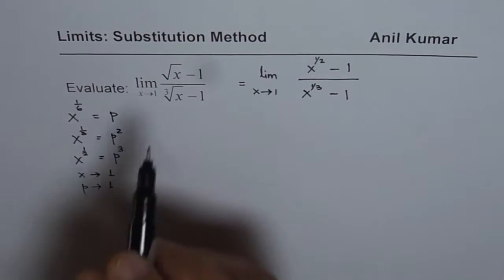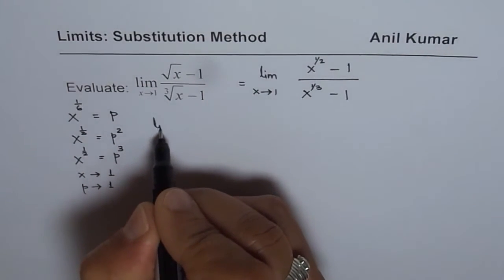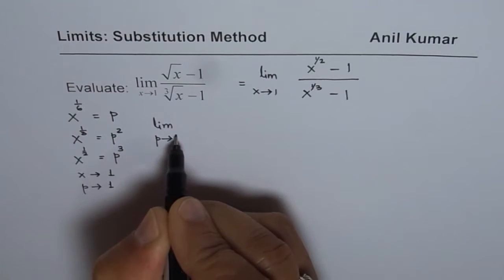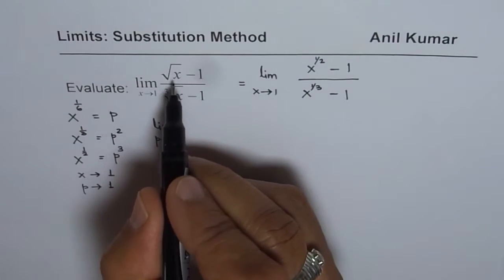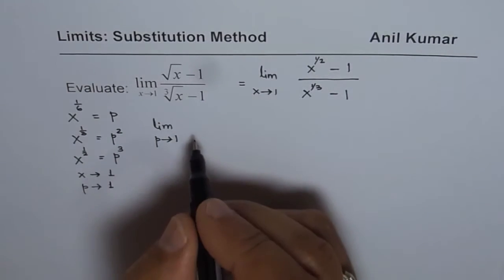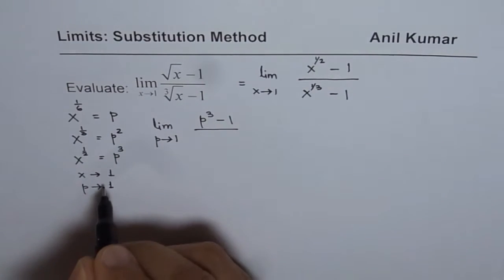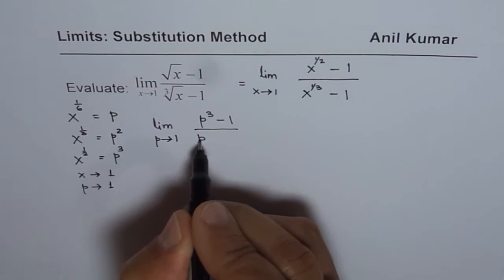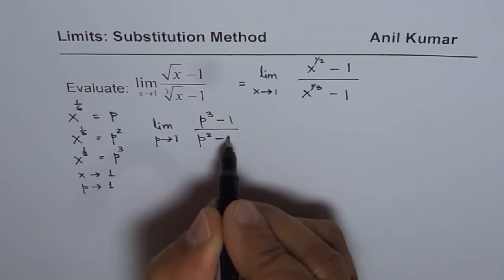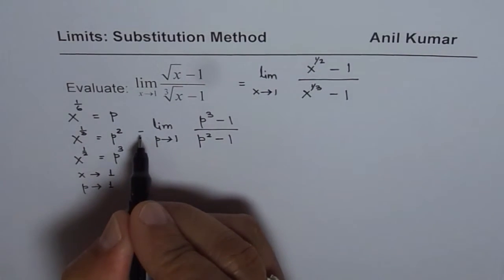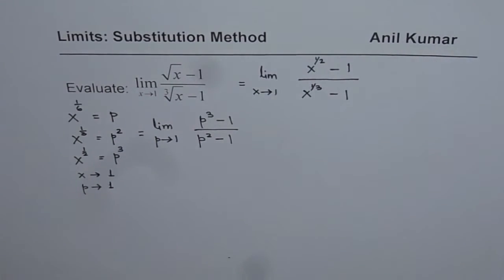So once we do this substitution, we can rewrite the question as limit p approaching 1. And now square root of x is p cube. So we have p cube minus 1 divided by p square minus 1. I hope you understand. So that is now the question.